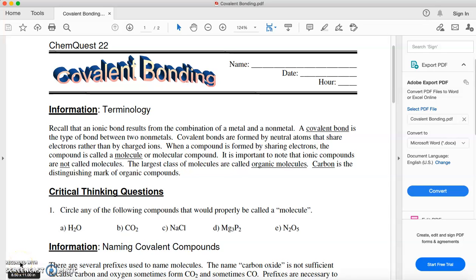Alright, covalent bonding. So recall, an ionic bond results from the combination of a metal and non-metal. A covalent bond is a type of bond between two non-metals.